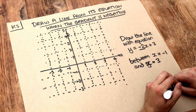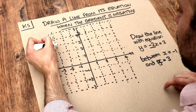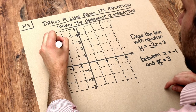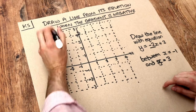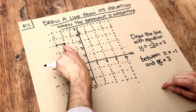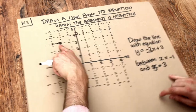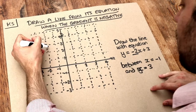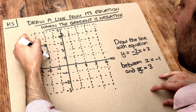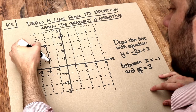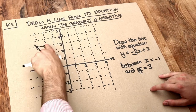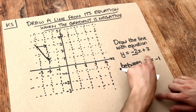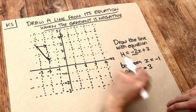More specifically, it tells you that each time you go across one square — so each time x increases by one — the y value will decrease by two. So the line is going to be going down. For each square you go across, you're going to go down by two, so it has a negative gradient.